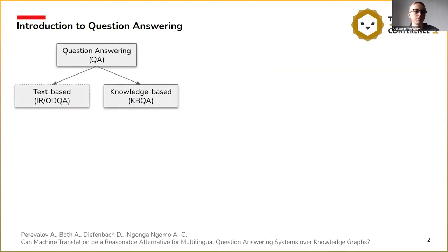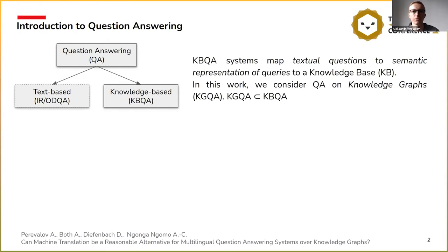We derive two paradigms of question answering. The first one is text-based question answering that works over unstructured data. The second one is knowledge-based question answering that works over structured data — it can be a database, SQL database, knowledge graph, or any other structured source. We define the task of a knowledge-based question answering system as a mapping of textual questions to the representation of queries to knowledge bases. In this work we consider a specific subset: knowledge graph question answering.